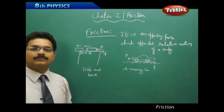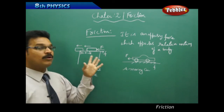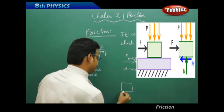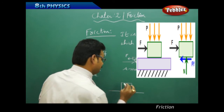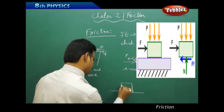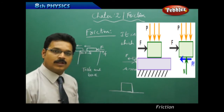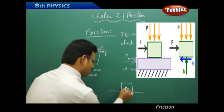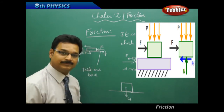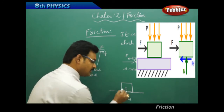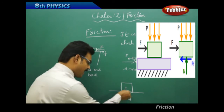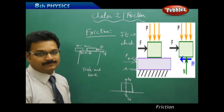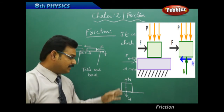Let me explain more about friction by drawing a free-body diagram. This is a block which is on the surface, and the block is stable. Now, what are the forces acting on the block? As we discussed in the last chapter: one force acts downward — that is the weight of the body W — and there is another force at the point of contact of the block and the surface acting upward, normal to the point of contact. This is the normal force.